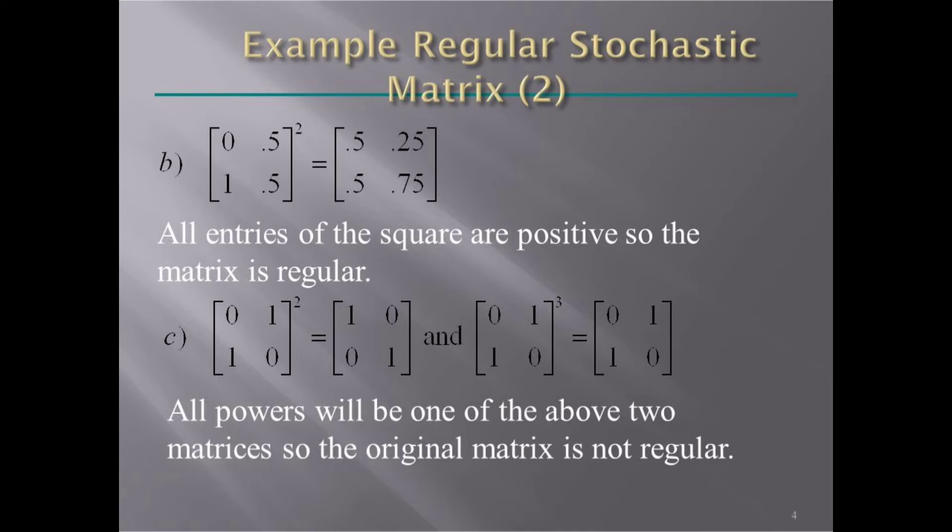In C, when we square the matrix, all powers will have the same form as the original two-by-two matrix, so the original matrix is not regular.